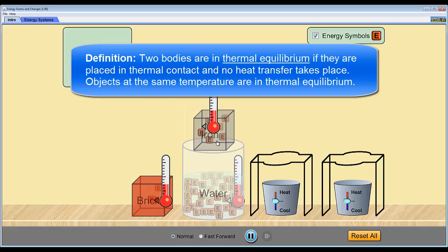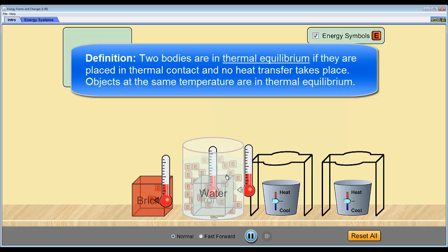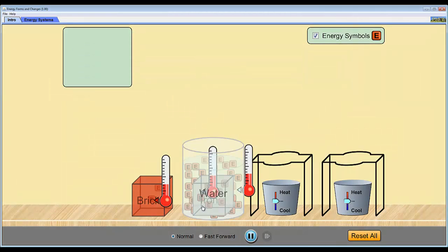If we drop the iron into the water, again, we see that the water level rise as we displace the water with the iron, but we see that no energy flows from the iron to the water or vice versa.